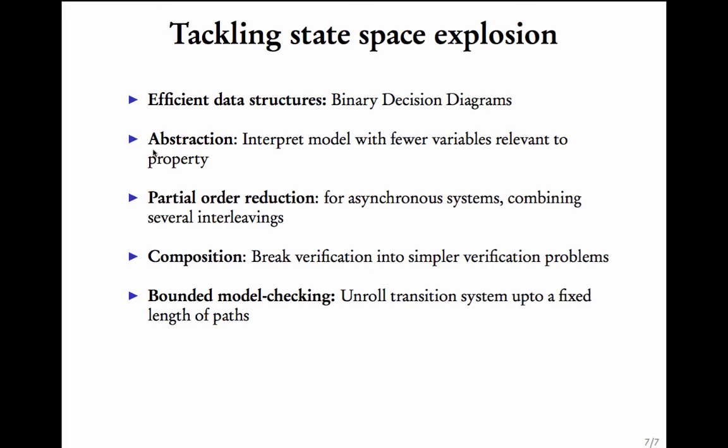Another method is to interpret your model with fewer variables relevant to the property. This is called abstraction. Instead of looking at the entire model itself, we need to come up with a view of the model with fewer variables, and we need to choose these variables in such a way that they are the ones which will affect the property that we have in mind.